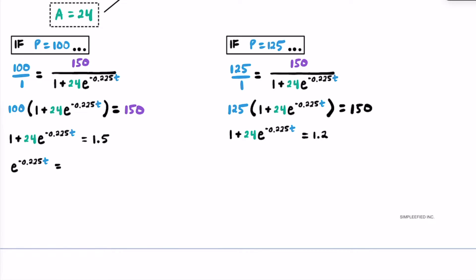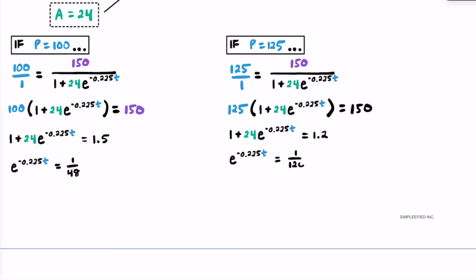For the p=100 scenario, after subtracting 1 and dividing by 24: 1.5 minus 1 is 0.5, and 0.5 over 24 is the same as 1 over 48, keeping a clean fraction. For the p=125 scenario, 1.2 minus 1 is 0.2, and 0.2 over 24 — multiplying top and bottom by 5 — is the same as 1 over 120. So we've now isolated e to the negative 0.225t equal to 1/48 in the first case, and equal to 1/120 in the second.